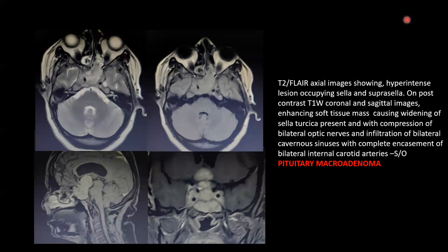Axial T2 and FLAIR image showing a hyperintense lesion, which shows intense homogeneous enhancement on post-contrast study. There is associated widening of the sella. On coronal post-contrast T1-weighted image, there is infiltration of bilateral cavernous sinus with complete encasement of bilateral internal carotid arteries, with no associated narrowing. The lesion is also involving bilateral optic nerves. This is a case of pituitary macroadenoma.